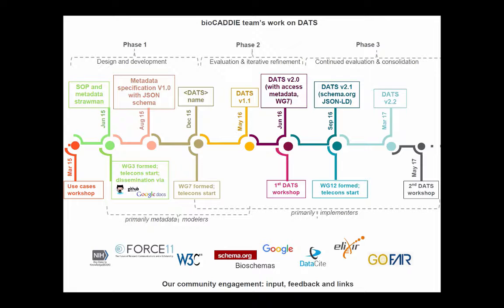We engaged with schema.org, and in particular there is an initiative mainly run by Elixir but open to everyone called Bioschemas, which is looking at providing guidelines on how to use schema.org for biosciences. In that process, we also engaged with the Google developers of schema.org, and we also took into account DataCite as a very important model for describing data.